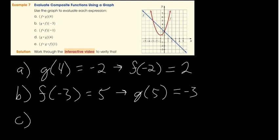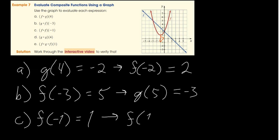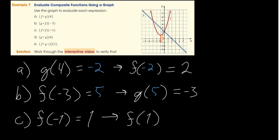For c, f of f of negative 1: first find f of negative 1. At negative 1 on the graph, f looks like 1. Then find f of 1 — at x equals 1, f looks like 5. So f of f of negative 1 equals 5.